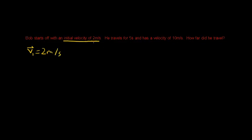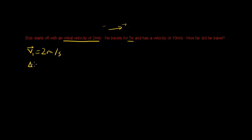Note that we don't need to worry about direction here because we're assuming everything is in one linear direction — positives one way, negatives the other. So initial velocity is positive two meters per second. We also have time equals five seconds.